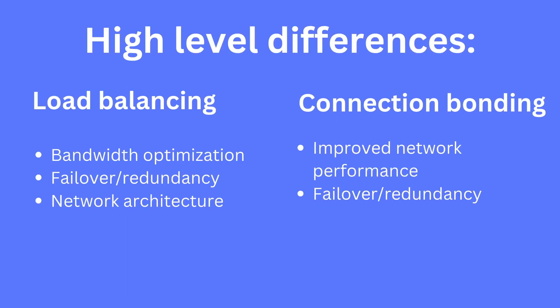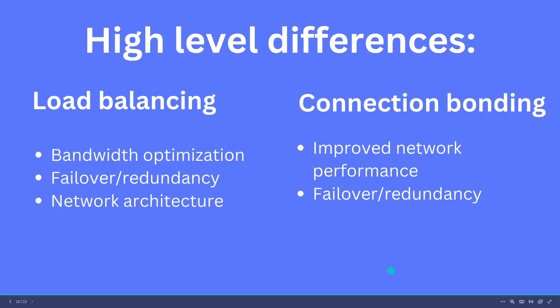At a high level, the differences are: load balancing is about bandwidth optimization, failover and redundancy, and deploying more intelligent network architectures. Connection bonding improves network performance by combining different internet connections together to offer better speed, as well as failover and redundancy. I hope that was useful if you've ever wondered what the difference is or were confused about the two different types of strategy. Thanks for watching, and to get more videos about different tech subjects, please consider subscribing to this YouTube channel.